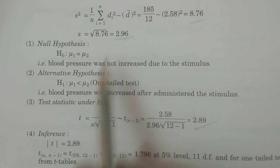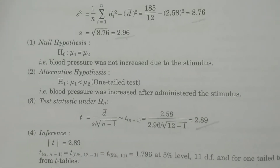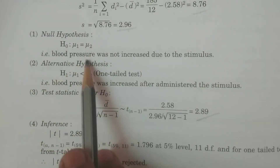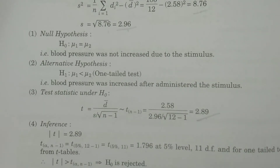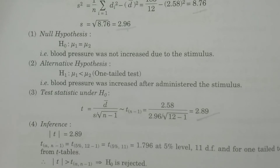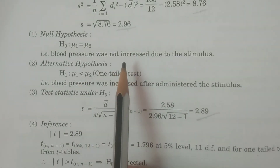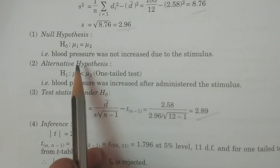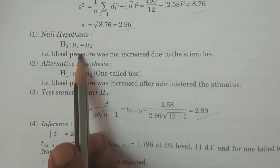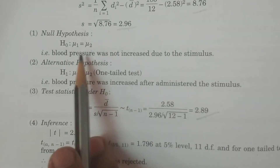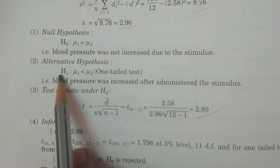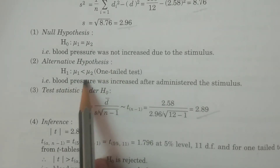Now we set up the hypotheses. Null hypothesis H0: μ1 equal to μ2 — blood pressure was not increased due to the stimulus. Alternative hypothesis H1: μ1 less than μ2, meaning it is a one-tailed test. This means μ2 is greater than μ1 — blood pressure increased after the stimulus.